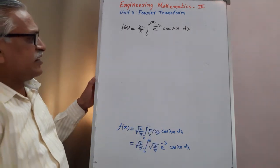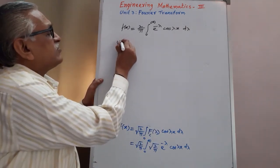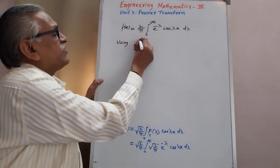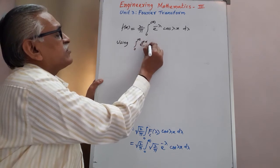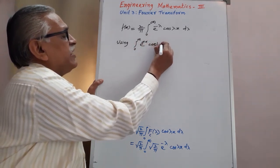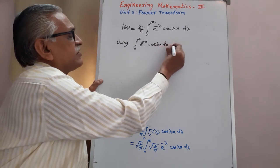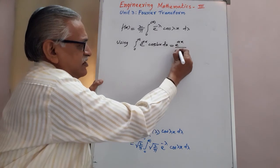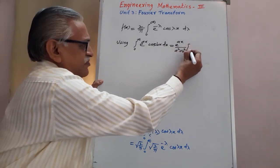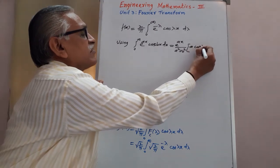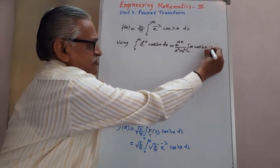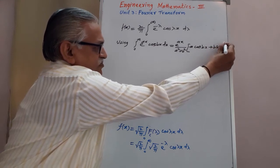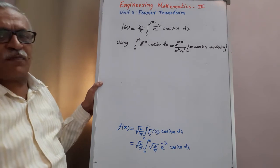Then using the standard result: integration from zero to infinity of e raised to ax times cos(bx) dx with respect to x equals e raised to ax divided by a squared plus b squared, times the quantity a cos(bx) plus b sin(bx).